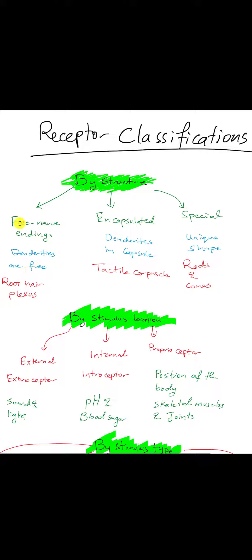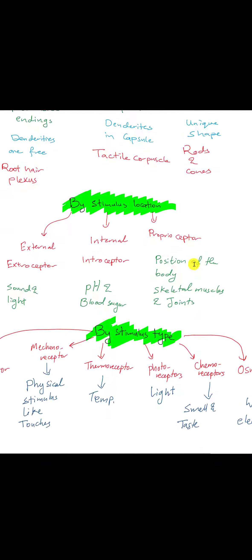The dendrites can be free. This is free nerve endings like the root hair plexes, the one we saw in AB1, or encapsulated, the dendrites are encapsulated, like the tactile corpuscle, or the special structure, which in this case they have a unique shape. Those are the rods and cones we will see in this chapter.